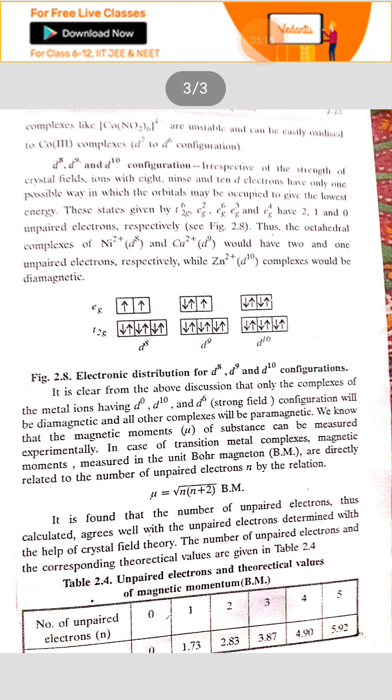we have usually the square planar complexes of nickel because it has only one vacant orbital and the hybridization becomes DSP2.